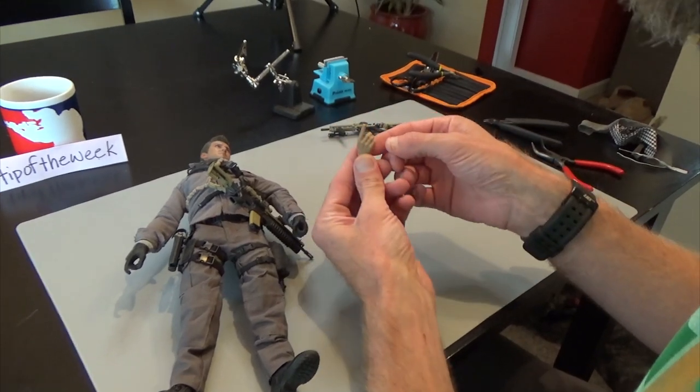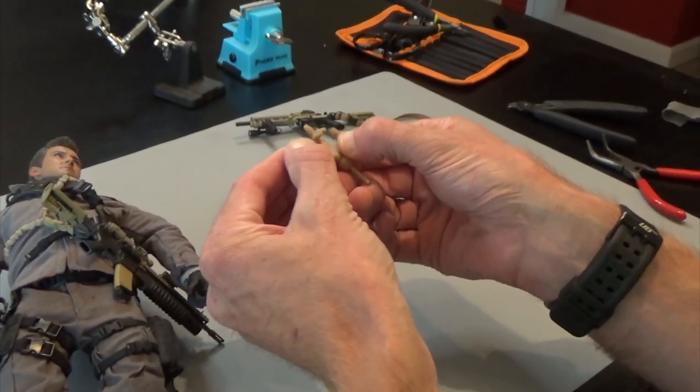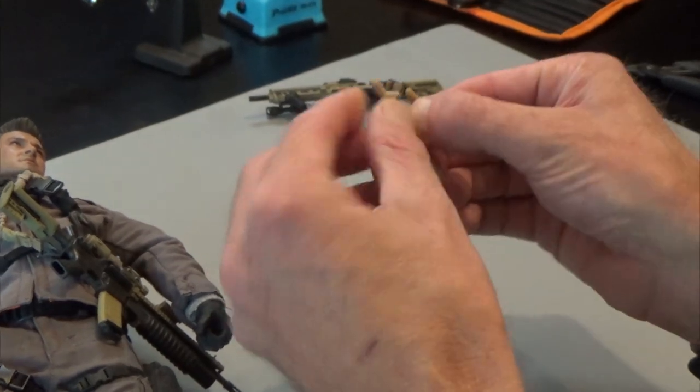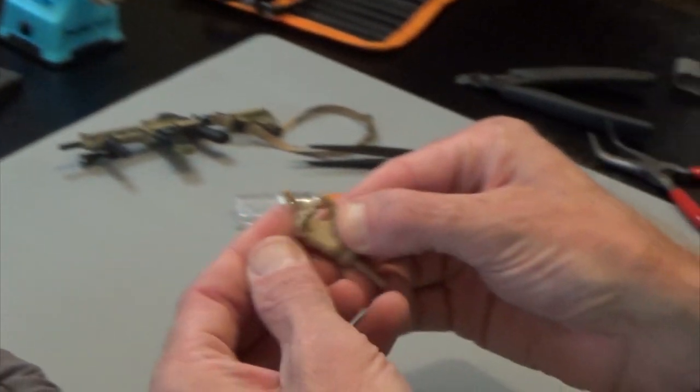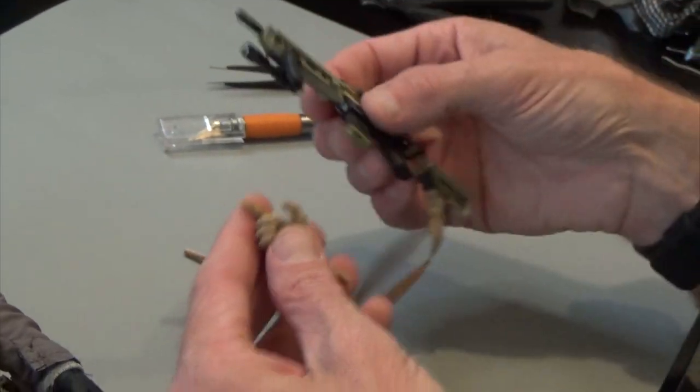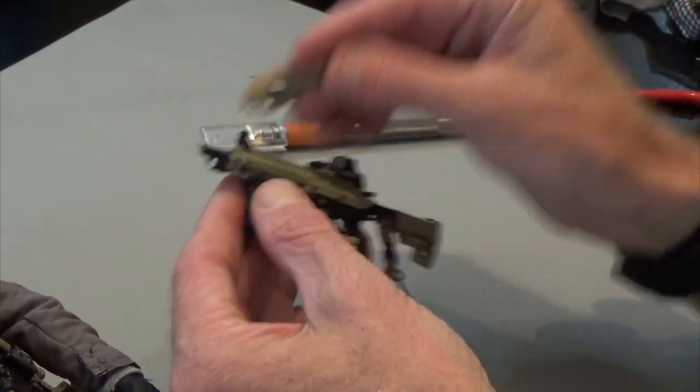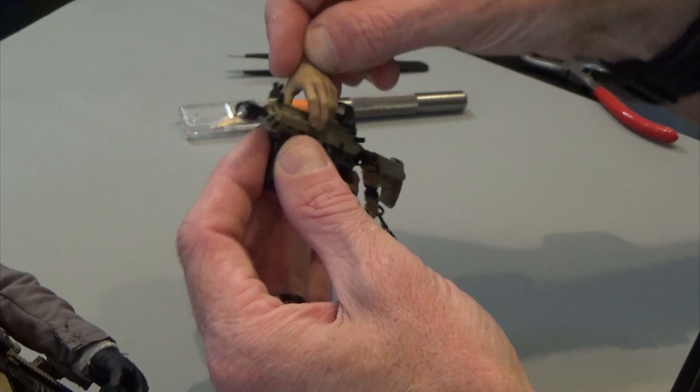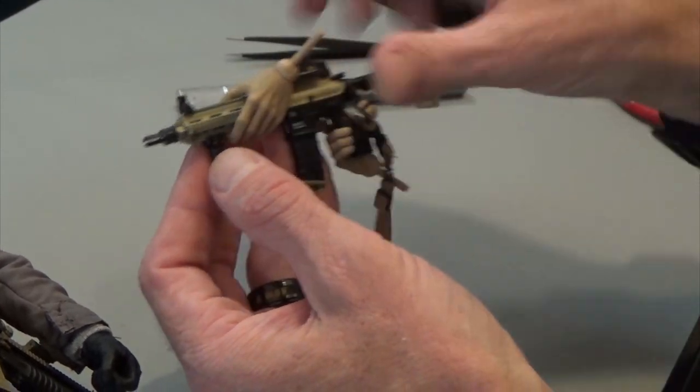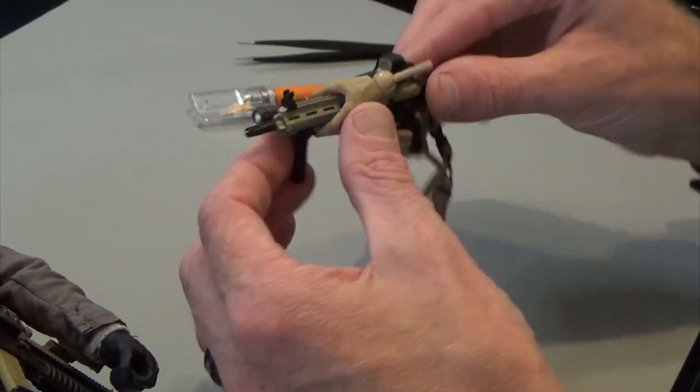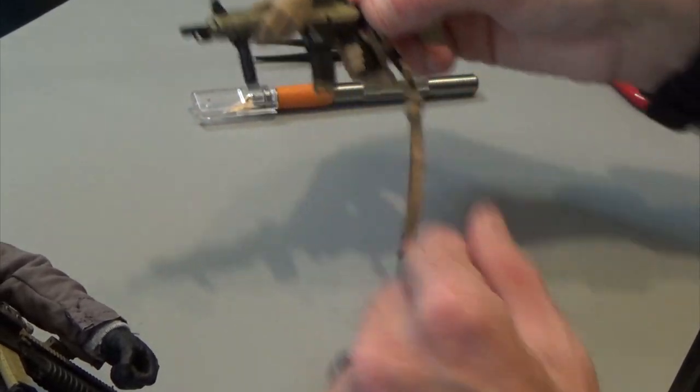So you can see these hands from Easy and Simple. They actually have fingers that aren't connected, which is a good thing because that helps you when posing them on weapons. You can see, and I'm not breaking anything, but much easier to bend the fingers, put them around stuff.